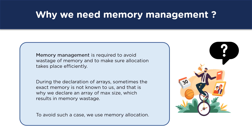Memory management is required so that there will be no wastage of memory and to make sure that allocation takes place efficiently. During the declaration of an array there are times when the correct memory is not determined until runtime. To avoid such cases we usually declare an array of maximum size, but because of this some memory remains unused. For example, if we declare an array of size 30 but only need size 10, the rest gets wasted. To avoid such cases we use memory allocation.